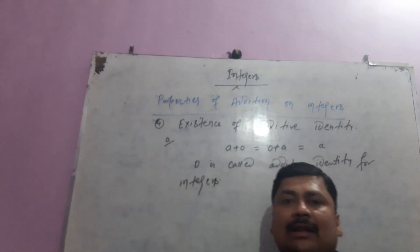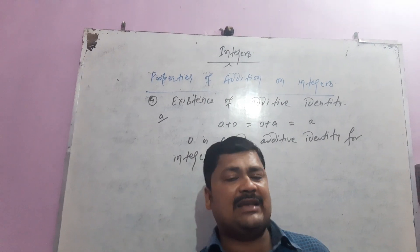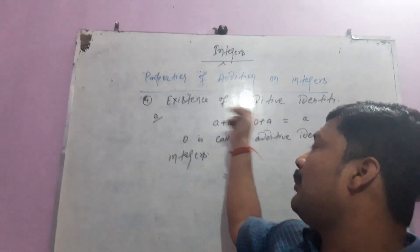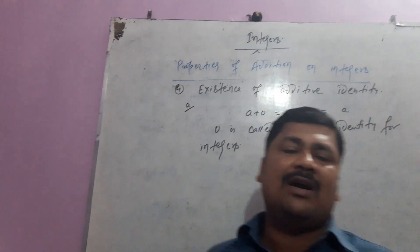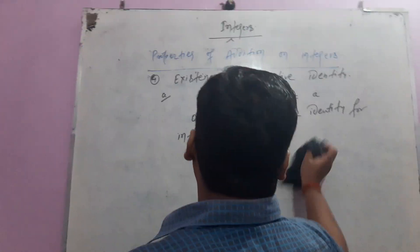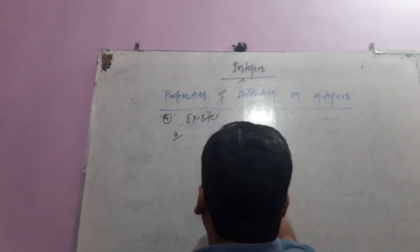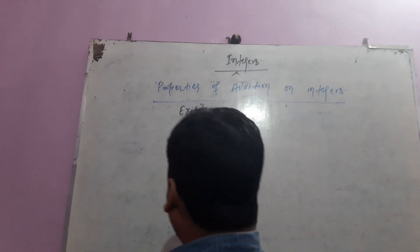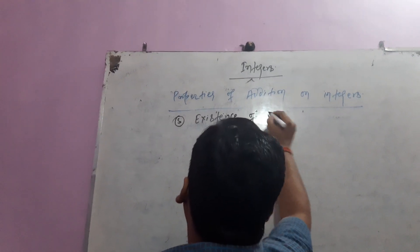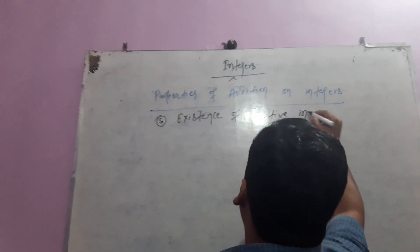Now here is the last law for the properties of addition. To recap: the first was Closure Property, second was Commutative Property, third was Associative Law, fourth was Existence of Additive Identity, and the last one is the Existence of Additive Inverse.